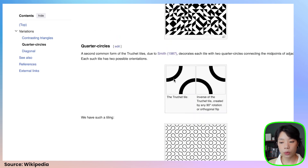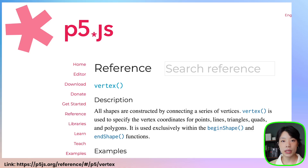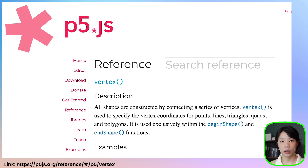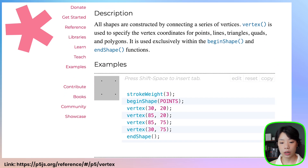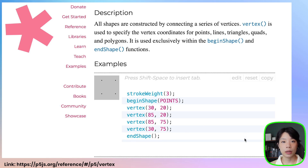Let's start with the contrasting triangles. I'm going to use the function called vertex. Vertex basically takes in two arguments — the x and y coordinates of the point that we want to draw. But to use the vertex function, we also need two additional functions called begin shape and end shape. Begin shape comes at the beginning, and end shape goes at the end.